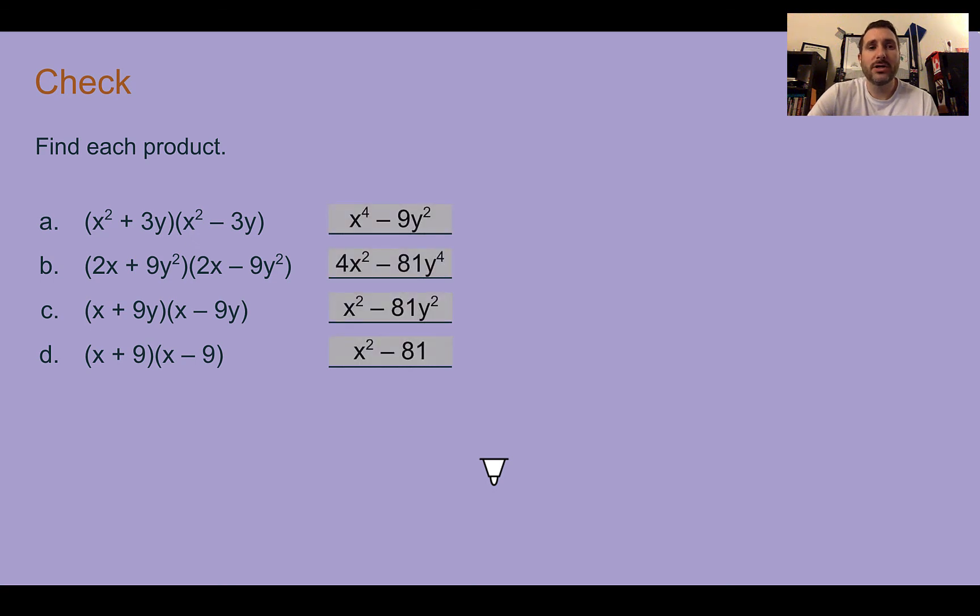Check your answers. So the first one, we have x⁴ - 9y². B, 4x² - 81y⁴. C, x² - 81y². And D, x² - 81. All of these actually follow the same rule where we have a product of a sum and a difference. They're the same thing except different signs. So all of these follow the same pattern of a² minus b², a² minus b².